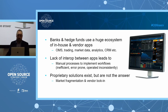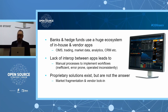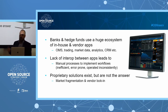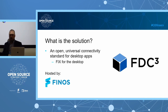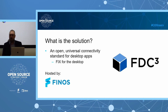Proprietary solutions for those problems do exist — we've had them in our product for four or five years — but they're not the right answer. They lead to market fragmentation, vendor lock-in, and application vendors who don't know what to target or have to support multiple different proprietary APIs. The solution we believe in is the open universal connectivity standard that is FDC3, designed to help desktop apps talk to each other without a backend integration — often described as 'FIX for the desktop.'